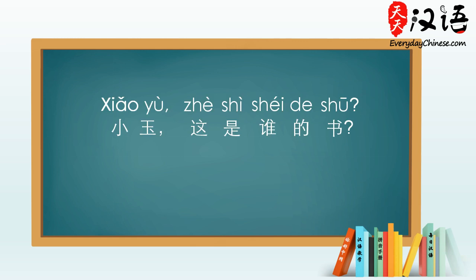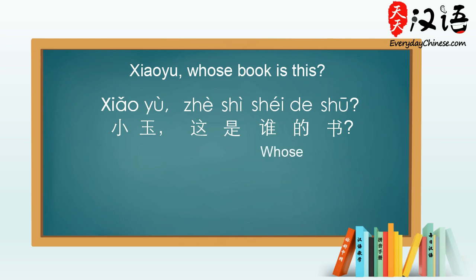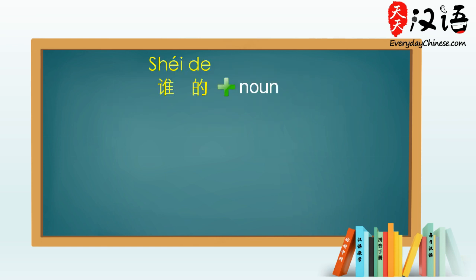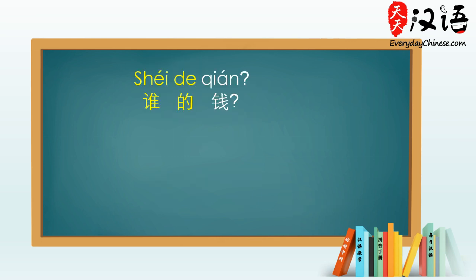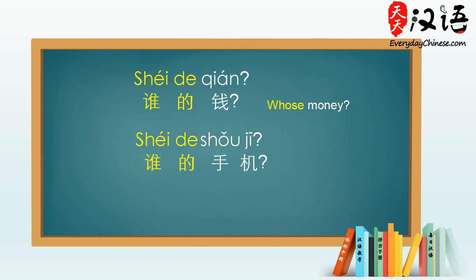小玉,这是谁的书? In lesson 26, we learned the question word 谁的 — whose. To use this word, we simply use 谁的 plus the noun to ask who this object belongs to. For example: 谁的书? 谁的包? 谁的钱? 谁的手机?